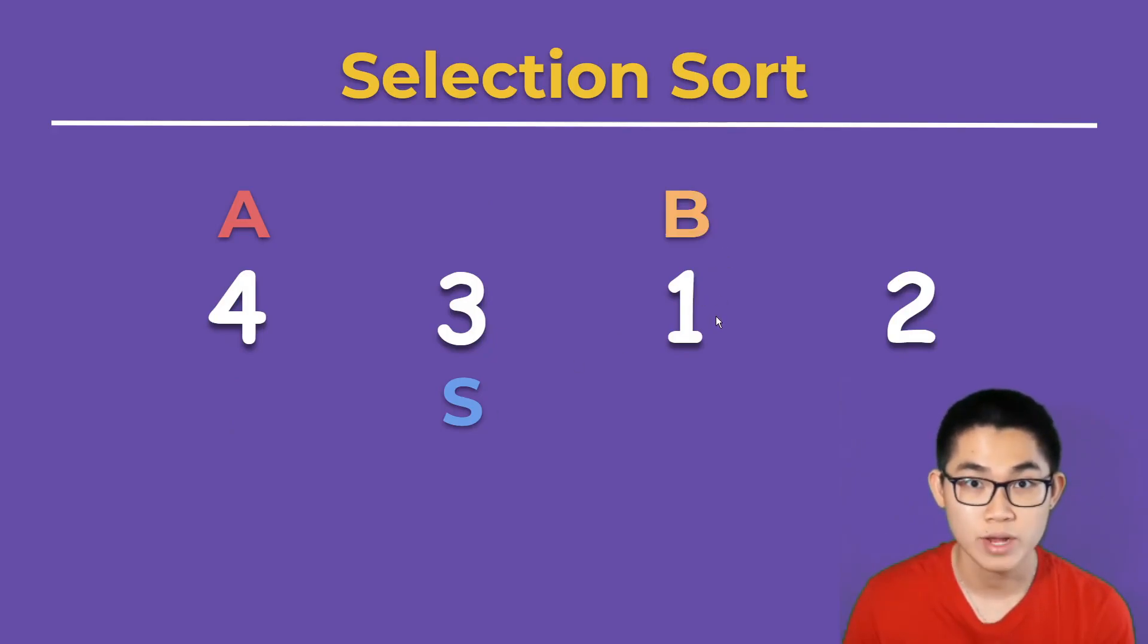1 is smaller than 3, so 1 becomes the smallest number. 2 is not smaller than 1. Now, B is at the end of the array, so we swap the numbers at A and S, which is 1 and 4.